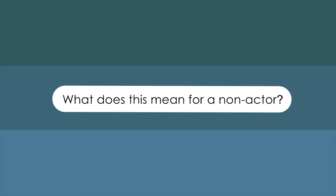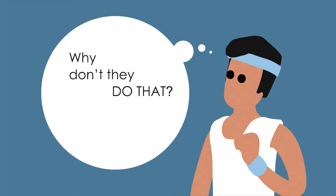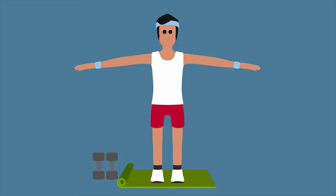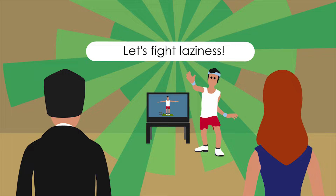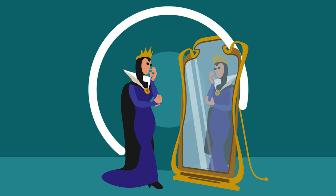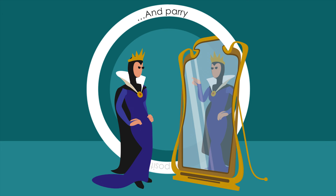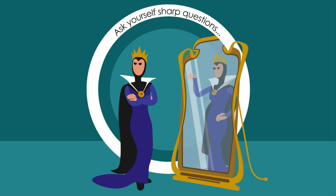What does this mean for a non-actor? We wrote the goal. Now ask yourself: why don't they do that? For example, I want everyone to do physical exercises. But don't jump to conclusions about their benefits — think about why they don't do it. Maybe it's laziness. Then we'll fight laziness, and we'll speak exactly about it. A heartfelt struggle is always interesting. Voice objections yourself and parry. Criticize your own position and defend it. Ask yourself sharp questions and answer them. It will draw you in, and make you an interesting and charismatic character.